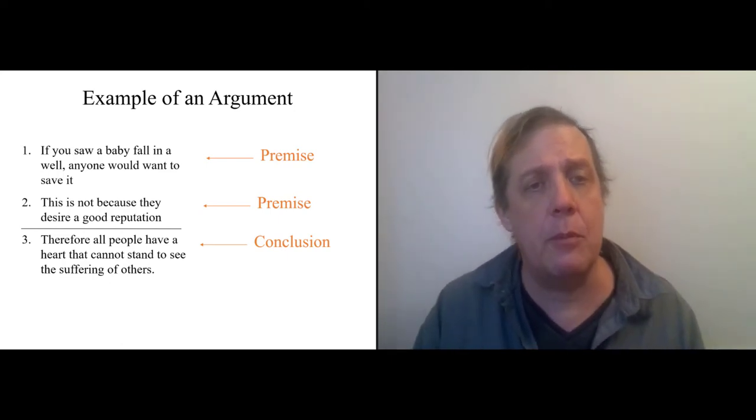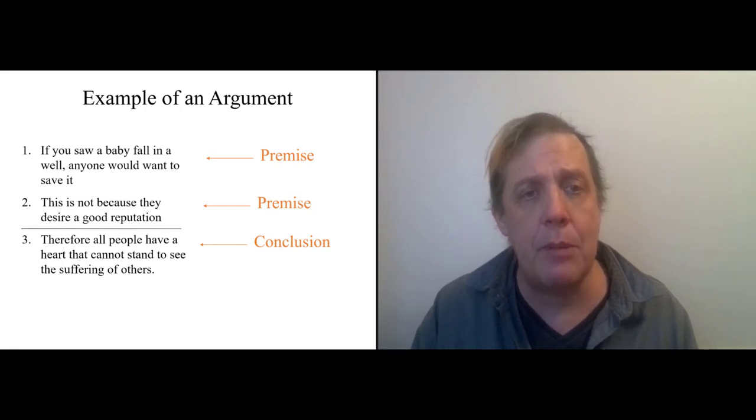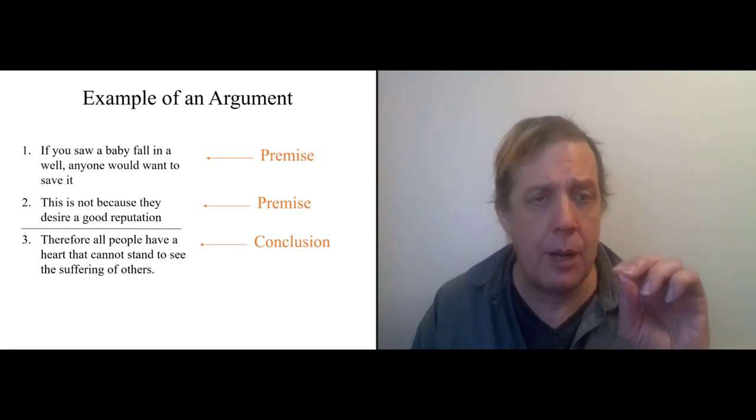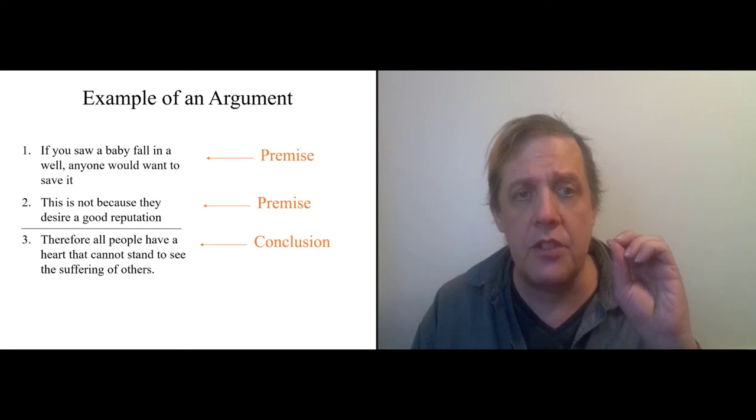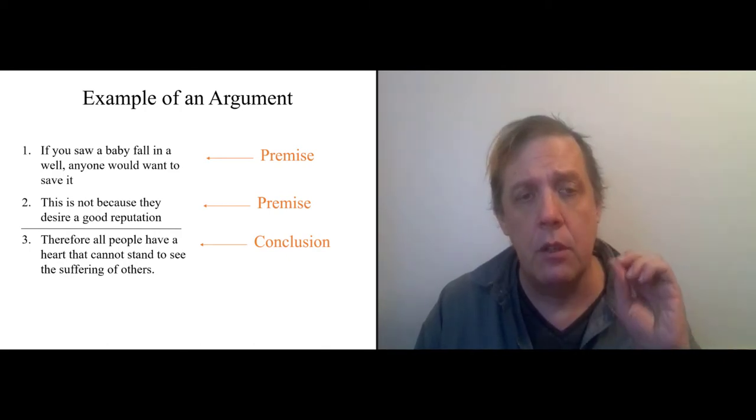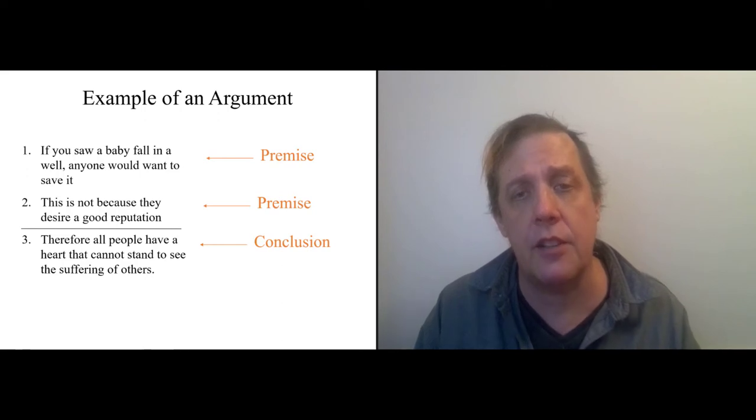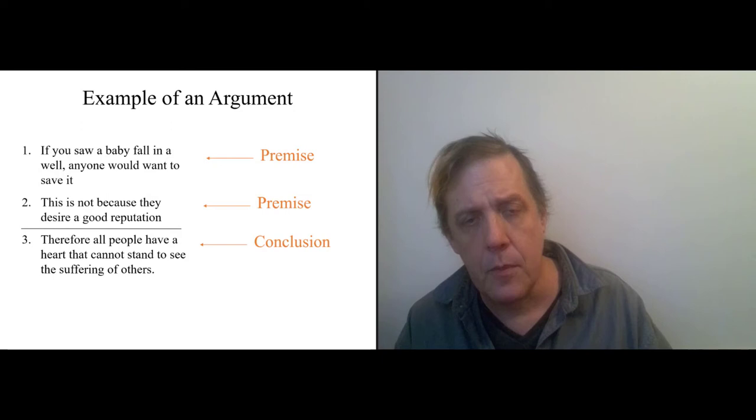So we could actually represent Mencius's argument like this. Statement one, if you saw a baby fall into a well, you would be upset. You would want to save it. And this isn't because premise two, you desire a good reputation. Conclusion. Therefore, all people have in them a heart that cannot stand to see the suffering of others. Right? Now you may not believe this, but now if you're going to deny it, you're going to have to cope with the argument.